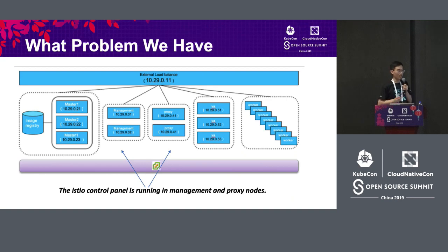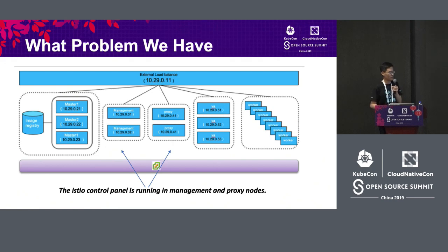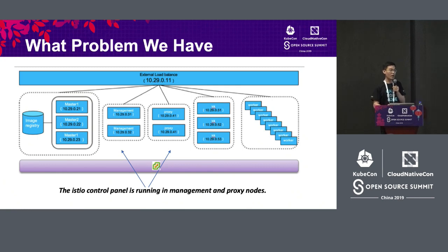This is the IBM Private Cloud Istio control plane. The control plane runs on management nodes — the management node is the pilot — and all of these components run on management nodes. If you look at proxy, it's focused on the ingress gateway. This is the topology structure.